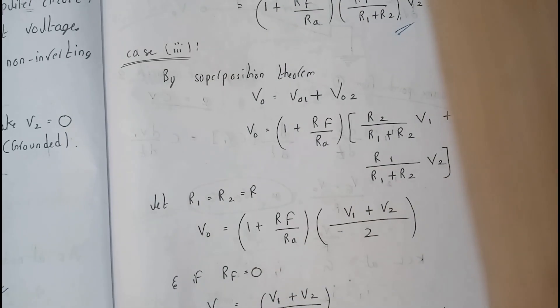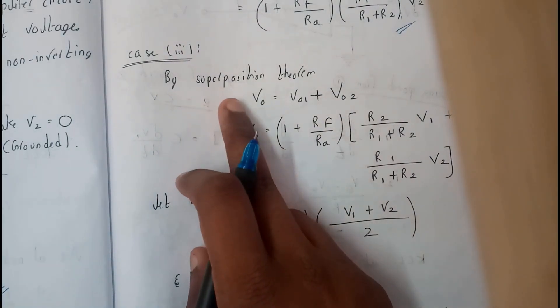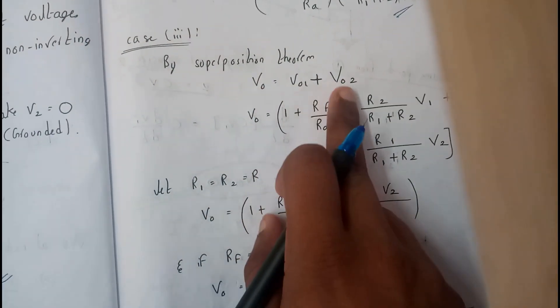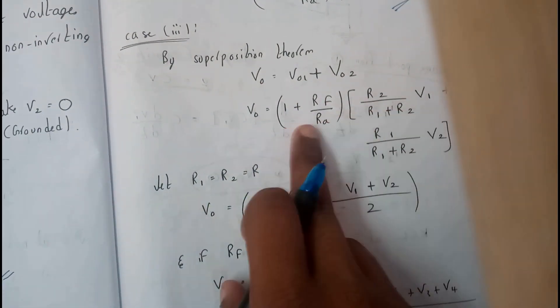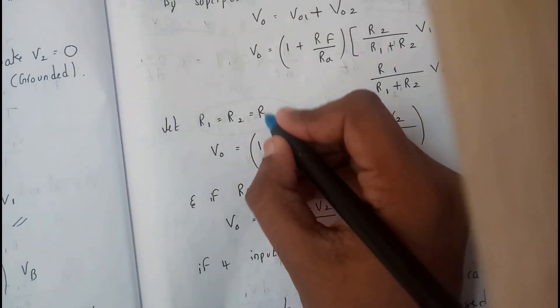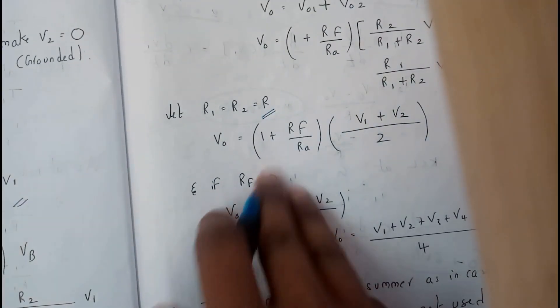Case 3 is nothing but addition of these two. Basically we will be adding these two by superposition theorem: V0 is equals to V01 plus V02. We will be assuming that R1 is equals to R2 is equals to R.